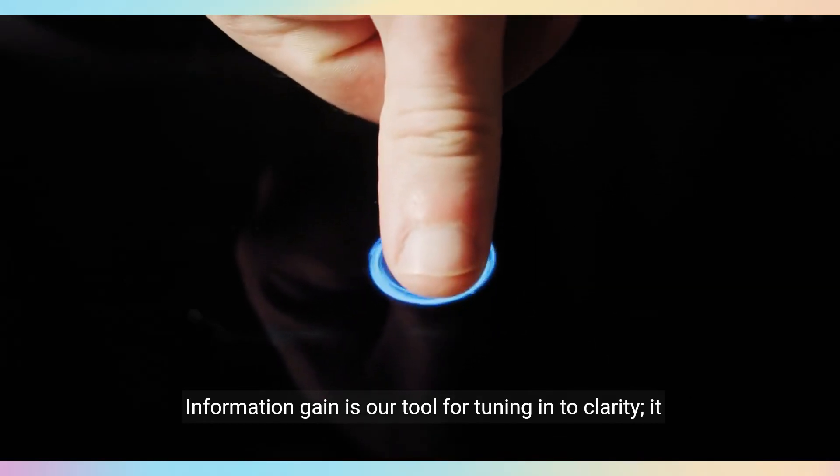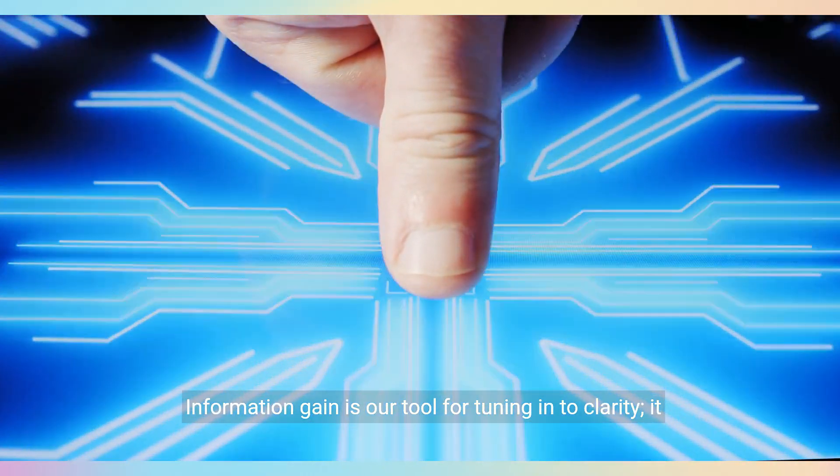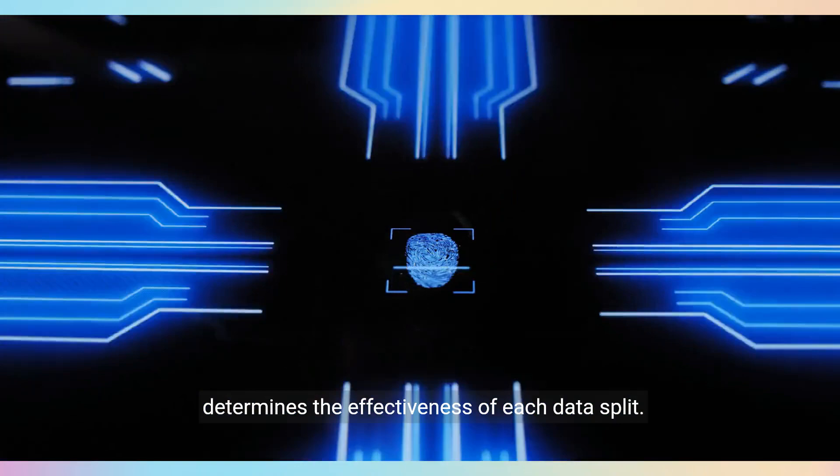Entering the interplay of definitions, entropy is our gauge for disorder within a dataset, resembling the static between radio stations. Information gain is our tool for tuning in to clarity. It determines the effectiveness of each data split.